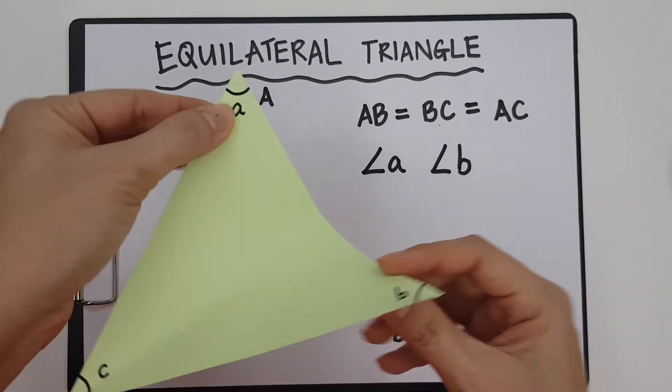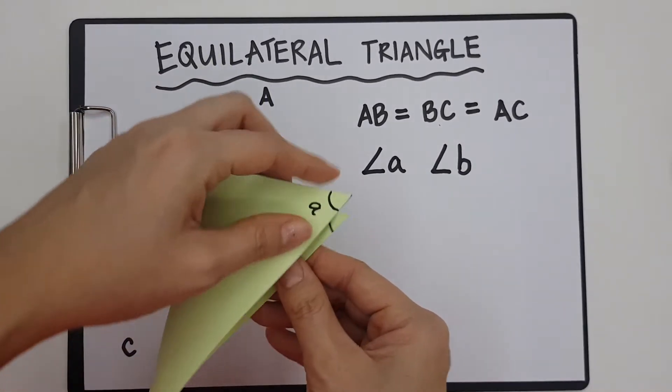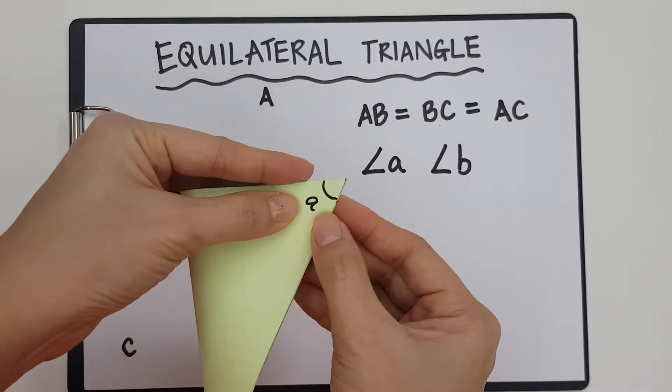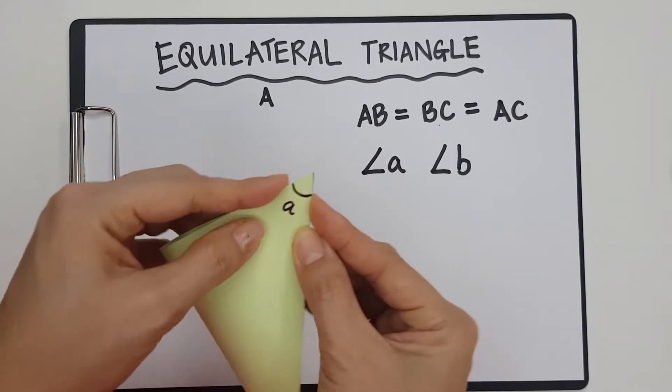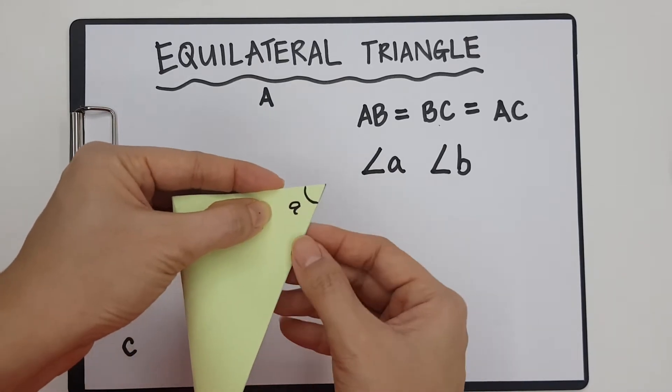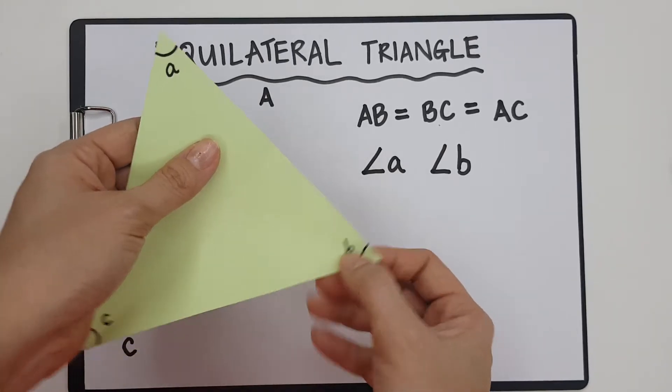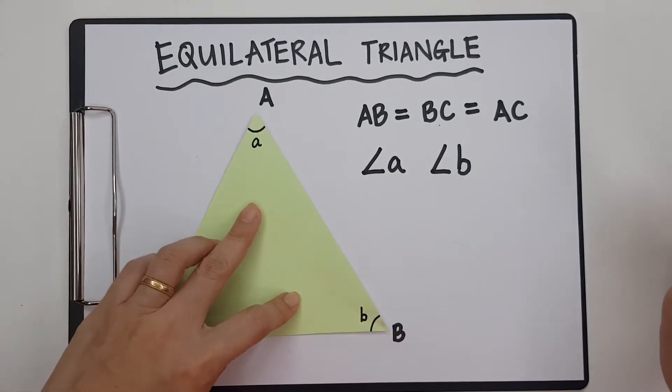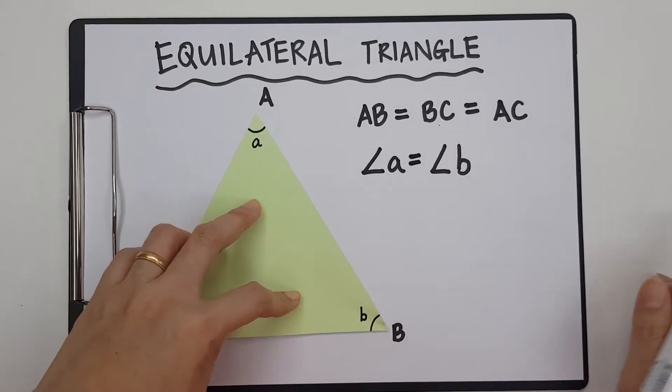I'm going to fold exactly, put A on top of B, and you will see that the angles match exactly, meaning angle A is the same as angle B. So I can write that down. Angle A is the same as angle B.